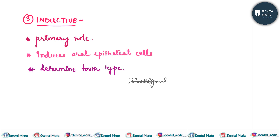The inductive function is the primary role of the pulp. It induces oral epithelial cells, causing the dental lamina to differentiate into the enamel organ. This is performed through secretion of growth factors. The pulp can also interact with the developing enamel organ and determine the tooth type.